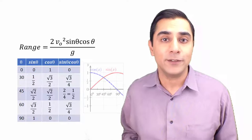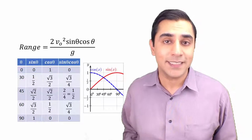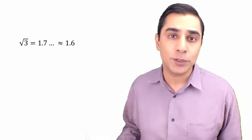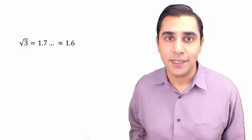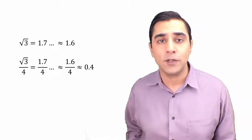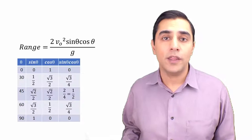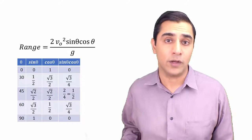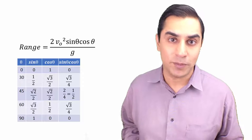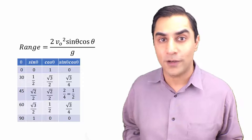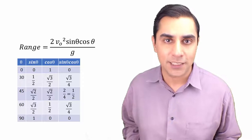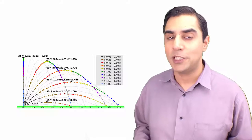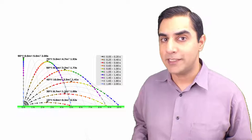Given that on the MCAT there are only five angles whose sine and cosine you need to know, their product is either 0, root 3 over 4, or 2 over 4 (aka one half). Root 3 is roughly 1.7, rounding to 1.6 for estimation: 1.6 over 4 is 0.4, which is definitely less than one half. So the largest value that sine × cosine of theta can have is when theta equals 45°, giving one half. The maximum range a projectile can achieve is when the angle of launch is 45°.